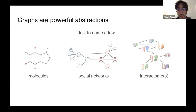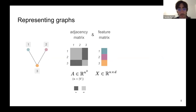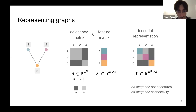Graphs are really powerful abstractions. We can model phenomena in the real world ranging from molecules to social networks and cellular interactomes — interactions between proteins, for example. To use them, we need to represent them computationally. We typically represent graphs jointly as an adjacency matrix storing connectivity and a feature matrix storing node features. These can also be merged into a tensor representation where feature matrices sit on the diagonal.